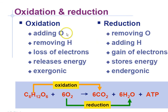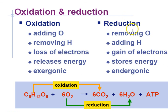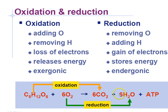Oxidation: think of it as adding oxygen, and the reverse for hydrogen — removing hydrogen. A hydrogen is one electron and one proton, so removing hydrogen is like the loss of electrons. It's a release of energy and it's always exergonic. Reduction: think of it as reducing the number of oxygens — or adding hydrogen — which adds electrons, and this is an energy-storing, endergonic process. Sugar loses all of its hydrogen through oxidation to become carbon dioxide, while oxygen becomes reduced by adding hydrogens to form water.